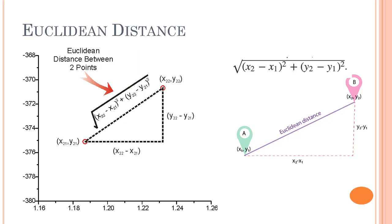Euclidean distance is used to find the distance between two points. So let's say this is my graph, and in this graph I have a point over here — this is one of my points — and this is one of my points. The formula for this will be the subtraction of y2 minus y1 squared, plus x2 minus x1 squared. This is x2 minus x1 and y2 minus y1.